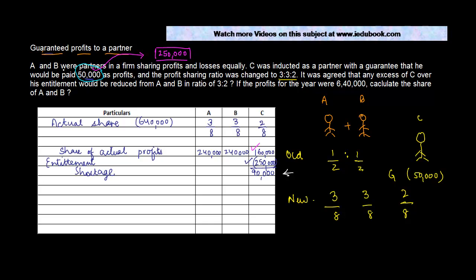It was agreed that any excess of C's entitlement over his actual share would be borne by A and B in the ratio of 3:2. The shortage is ninety thousand, so A bears 3/5 of ninety thousand, which is fifty-four thousand, and B bears 2/5 of ninety thousand, which is thirty-six thousand.